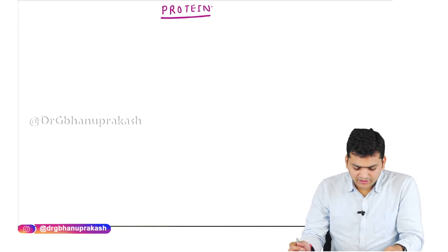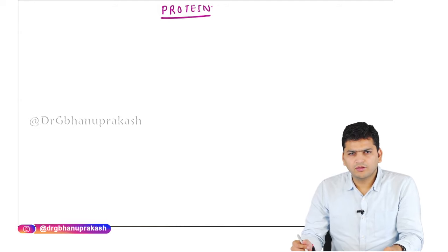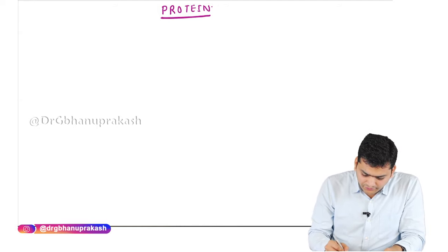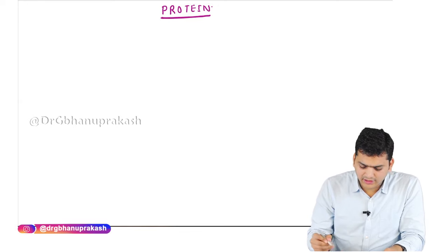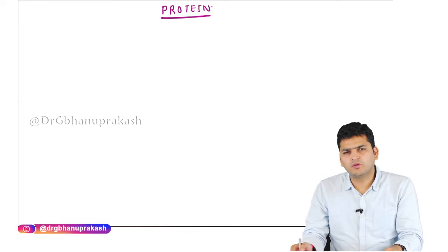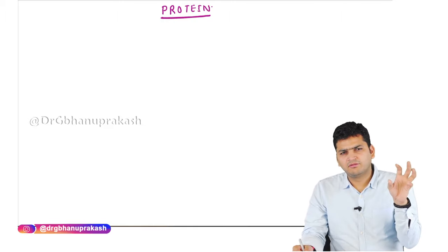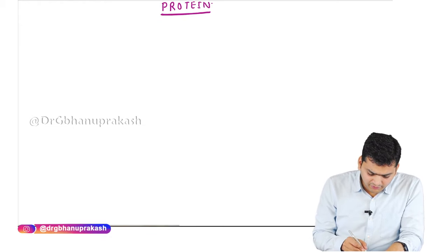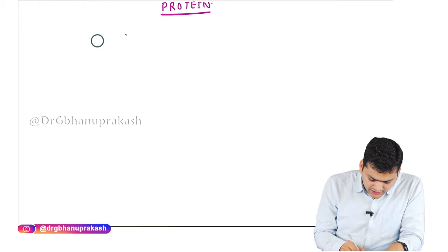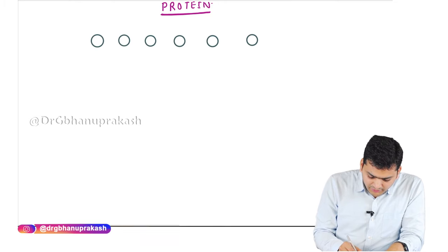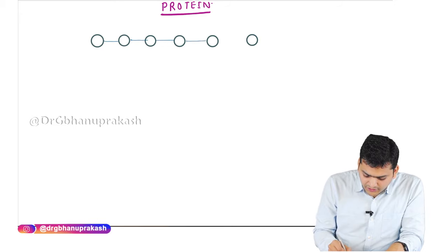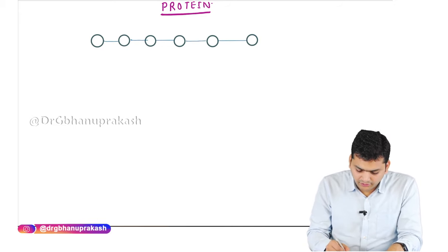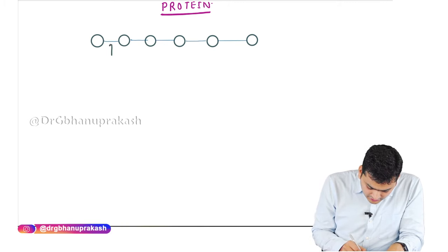Welcome. Today we will be starting with the topic of protein. The simplest definition of protein is that it is a polymer of amino acids — multiple amino acids held together to make protein. These amino acids are held together with the help of peptide bonds, and this polymer of amino acids is referred to as protein. The peptide bond is what we see here.